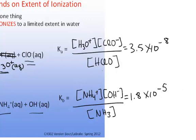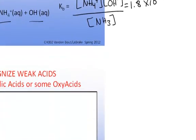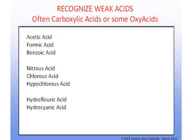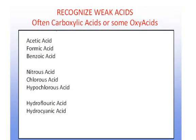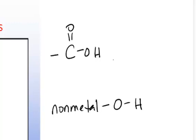These equilibrium constants can be found in appendix 5 in the back of your book or from online. Now, we're not going to memorize all of the names of the weak acids and weak bases, but you should be able to recognize that the weak acids are often carboxylic acids, which a carboxylic acid is a functional group that looks like this, or an oxy acid.